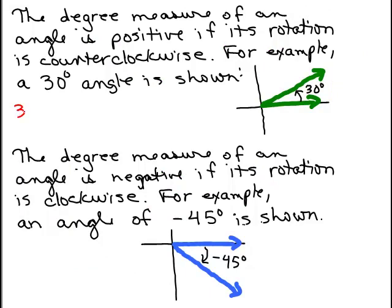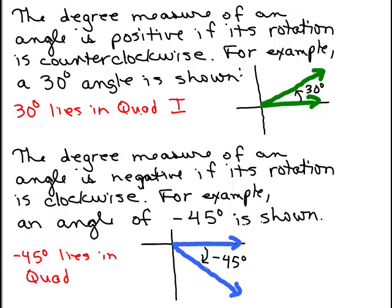If I go back once more, let's also go ahead and do these. Where does 30 degrees lie? What quadrant? Well, it's over here in quadrant one. And what about this negative 45 degrees? Where does it lie? That's quadrant four.